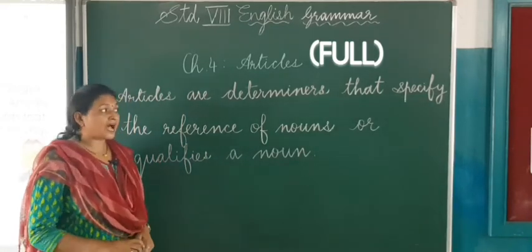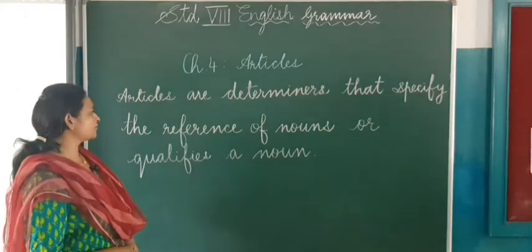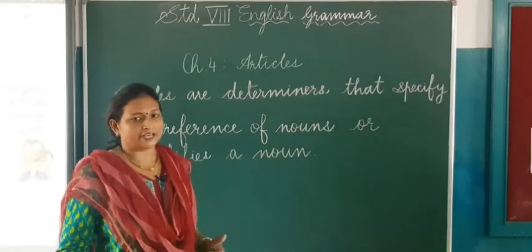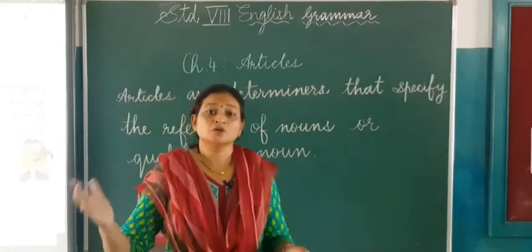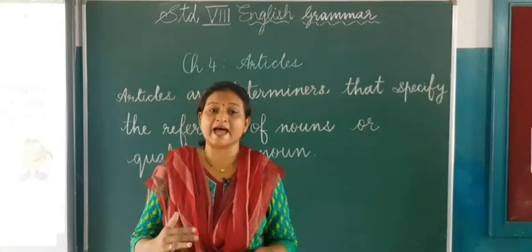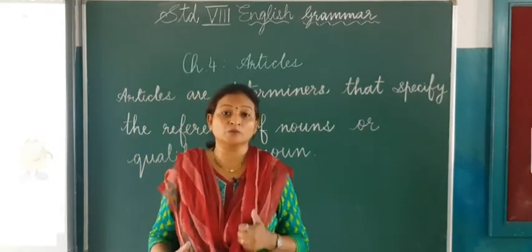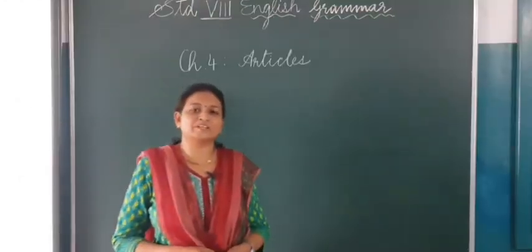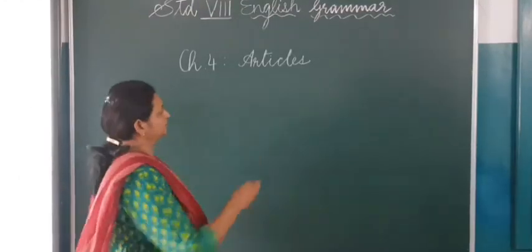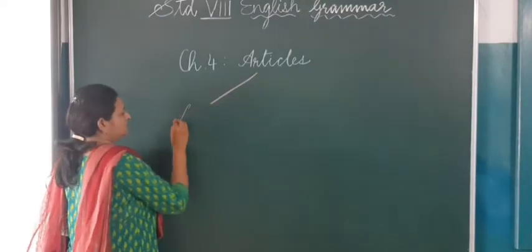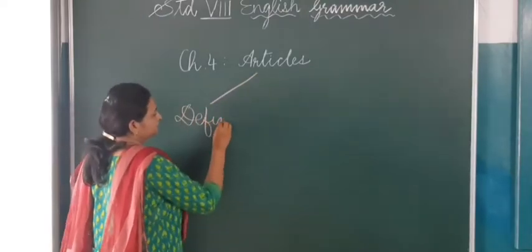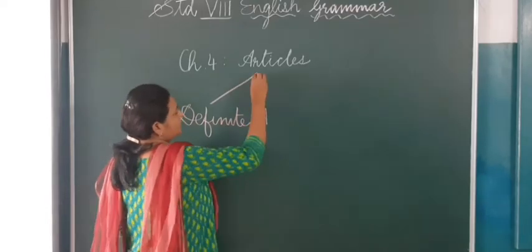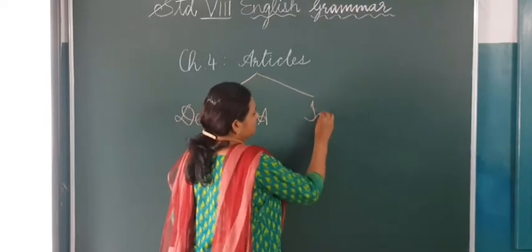Articles are determiners that specify the reference of nouns, or they qualify a noun. We can say that articles and determiners are almost the same. Articles can be divided into two parts: we have the definite article and the indefinite article.